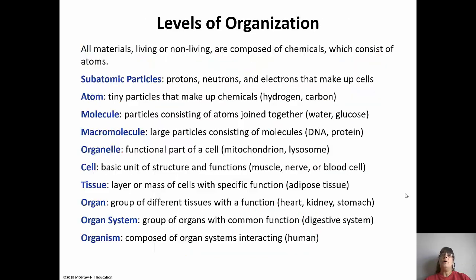The first important thing is how organisms are organized. We have non-living particles composed of chemicals that eventually combine to reach living particles. Subatomic particles - protons, neutrons, and electrons - make up atoms, which are chemicals like hydrogen, carbon, and nitrogen, everything on the periodic table. Atoms combine to form molecules. So the pattern is: subatomic particles form atoms, atoms form molecules, and molecules combine to form macromolecules like DNA and proteins.